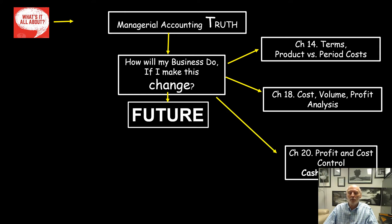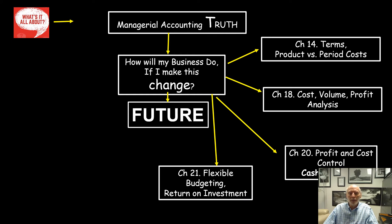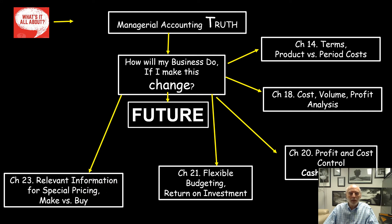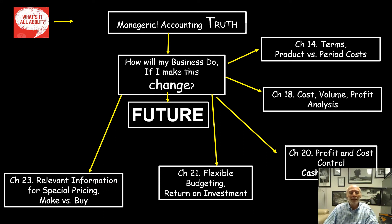Next, in chapter 20 we're going to talk about profit control and cash budgets. Then in chapter 21 we'll be dealing with flexible budgets and return on investment. Again, all these things have to do with how changes are going to affect the future. Then in chapter 23 we'll talk about relevant information for decision making — like should I offer a special price to a big customer, or should I make or buy things, that kind of thing.